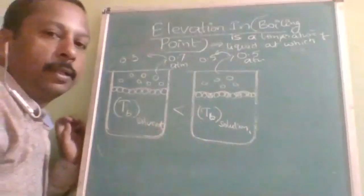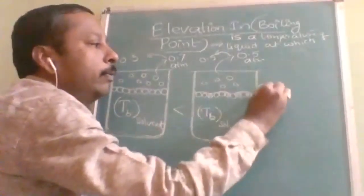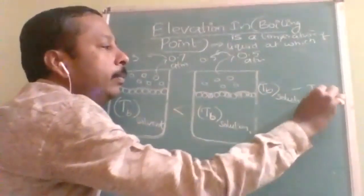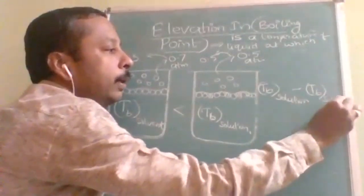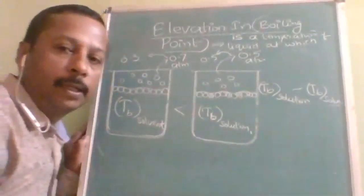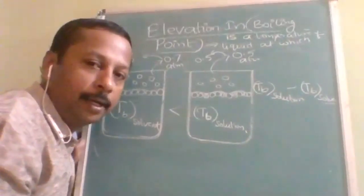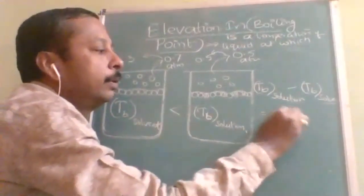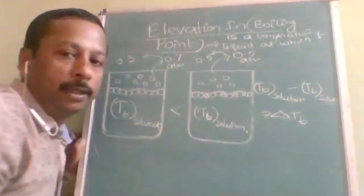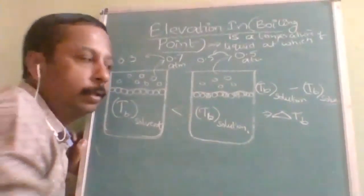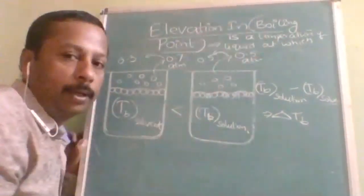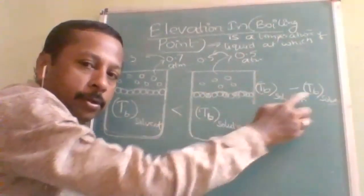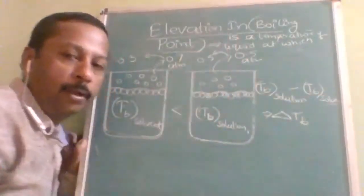How much does the boiling point increase? ΔTb = Tb(solution) − Tb(solvent). This is denoted as delta Tb. Whenever I say delta Tb, it means boiling point of solution minus boiling point of solvent, and it represents elevation in boiling point.